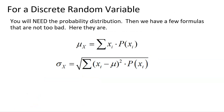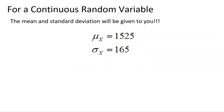If it's a discrete random variable, we have two pretty nice formulas for the mean and standard deviation. You have to be given the probability distribution — a list of all your outcomes and probabilities. Here are those formulas. If you have a continuous random variable, there are no formulas; I just give you the values — for example, the mean is 1,525 and the standard deviation is 165.